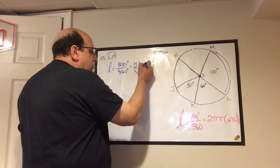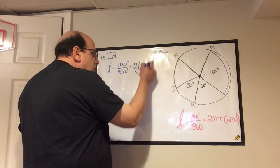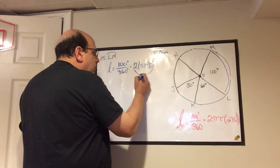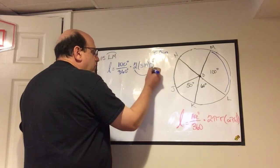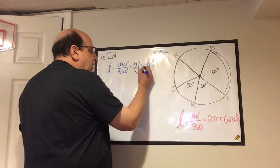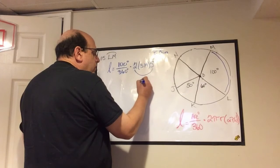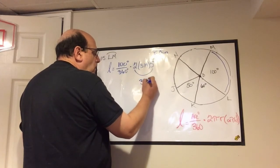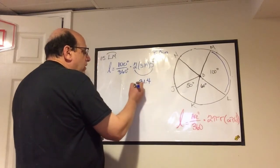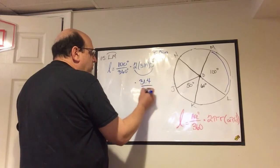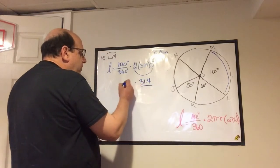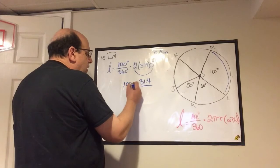Then ten times any number just means we move the decimal over one place. So two times five is ten, times 3.14 is 31.4. You can use your calculator to do it—that won't hurt my feelings at all.